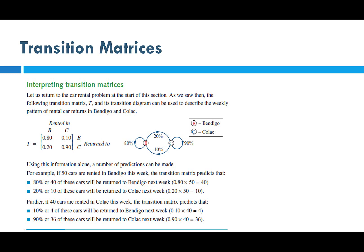Now let's look at interpreting transition matrices. Going back to the original Bendigo and Colac question — there's our transition matrix and diagram. Using this information, a number of predictions can be made. For example, if 50 cars are rented in Bendigo this week, the transition matrix predicts that 40 of these cars will return to Bendigo next week.